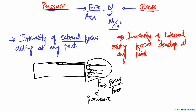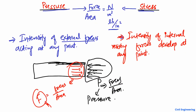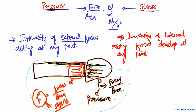There is some resistance created inside the object in order to resist these external forces. These internal resistance forces per unit area are known as stress. So the internal resisting forces created inside the body are known as stress. This was the first main difference between pressure and stress.